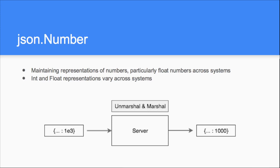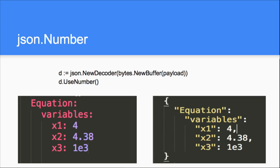json.Number means that when the JSON decoder encounters a float string like 1e3, if you ask it to use json.Number, it will parse 1e3 as a string and store it in a type called json.Number — preserving the original format rather than converting to float representation. In NotStar, YAML gladly takes 1e3 as a string, and on the JSON side I use json.Number, and then I compare both as strings. So that was one cool thing we handled.